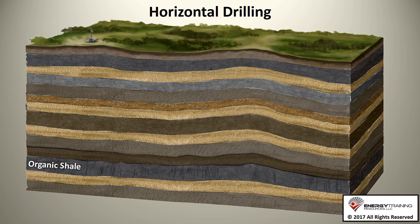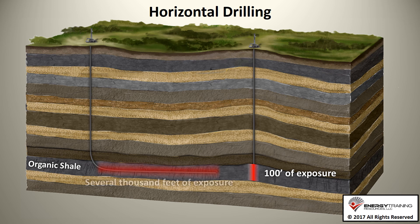Horizontal wells are drilled down vertically, or mostly vertical, until they get near the targeted formation and are then curved into a horizontal direction and run long distances laterally to give the wellbores extended exposure to the formation. For example, a vertical well piercing a 100-foot thick shale layer would only have 100 feet of exposure to the oil and gas interval, whereas a horizontal well would have several thousand feet of exposure.